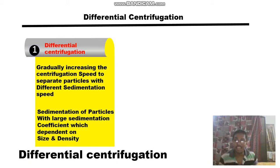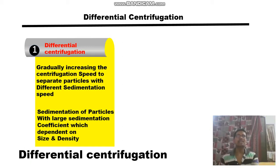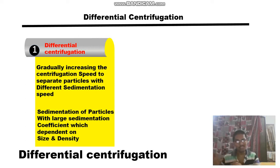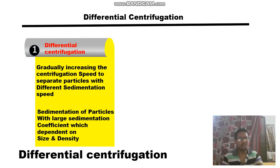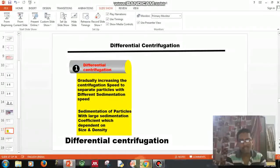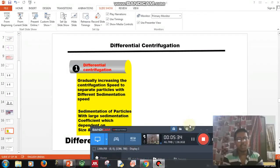The sedimentation rate in differential centrifugation can be increased by increasing the centrifugation speed. Larger particles sediment first, followed by smaller dense particles, and then very lightly dense particles. This technique is very useful for harvesting cells or producing crude substrate from tissue homogenates, as we will see in the examples.